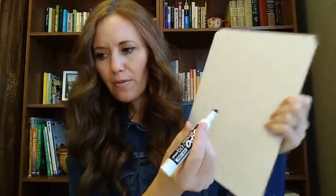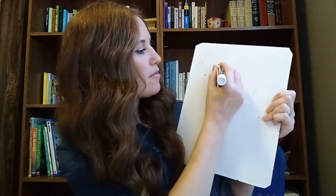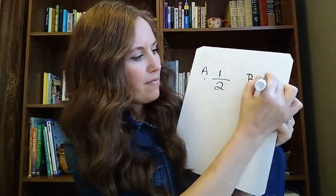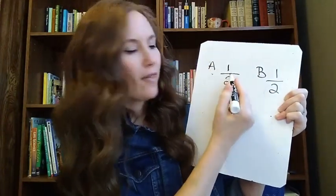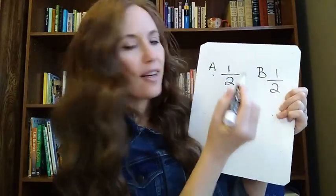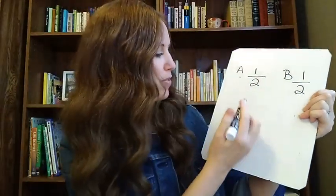What if I were to roll a die, and if I get a one or a two, that team gets a candy, but if I get a three, four, five, or six, that team gets a piece of candy? Is that fair? If I flip a coin, what are the chances team A will get it or team B? Well, one out of two, right? If it's heads, we have a one out of two chance, or tails, a one out of two chance. Pretty good odds.